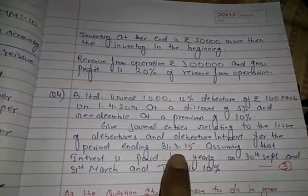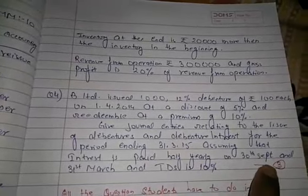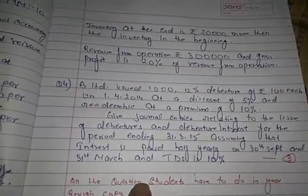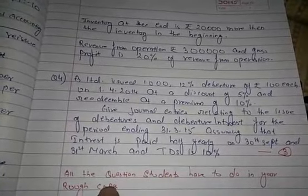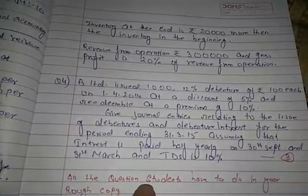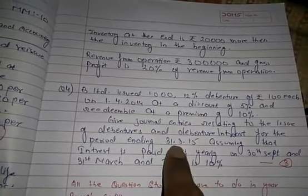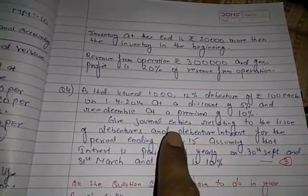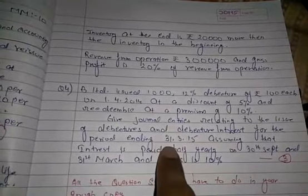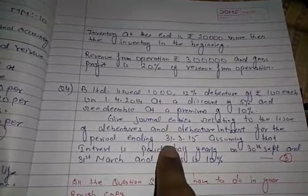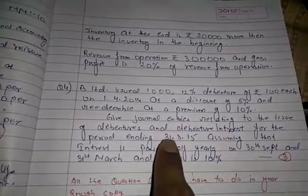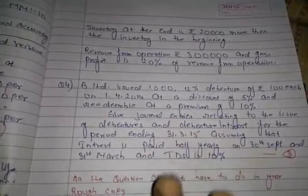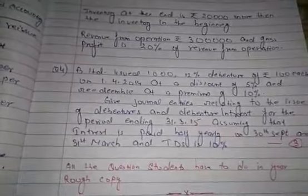In this question you have to pass the entry for issue of debentures, debenture interest, and TDS. This is also of three marks. All the questions are to be done in your rough copy. The questions covered in this test are from the share chapter, debentures, and accounting ratios — all from NCERT. Thank you.